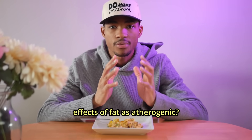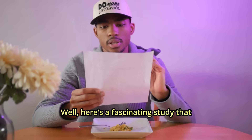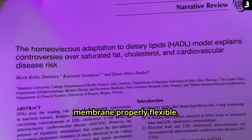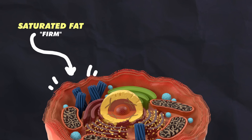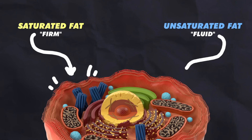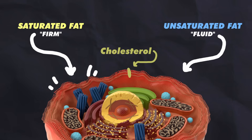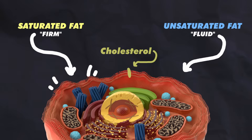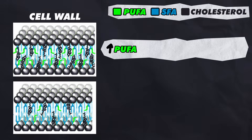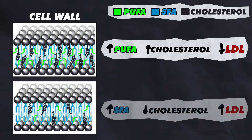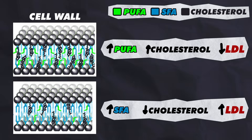Here's a fascinating study that looked at cholesterol levels being modulated to keep the cell membrane properly flexible. Saturated fat adds firmness and unsaturated fat adds fluidity. Cholesterol acts to support structure like a pillar in a building, right there in the cell wall. The more kinky, fluid polyunsaturated fats are incorporated, the more cholesterol the cell will call for — the more cholesterol needed in the cell, the less in the blood, and vice versa for saturated fat.